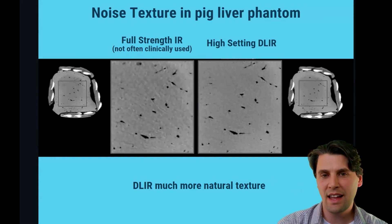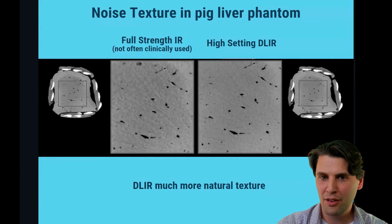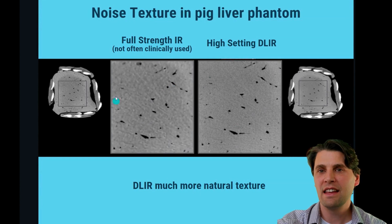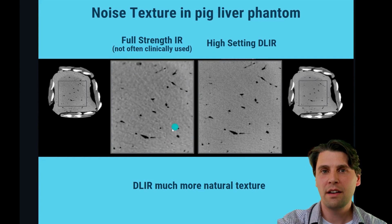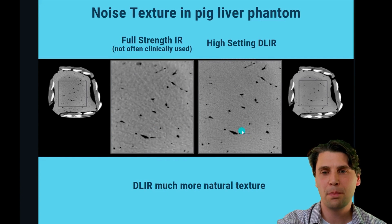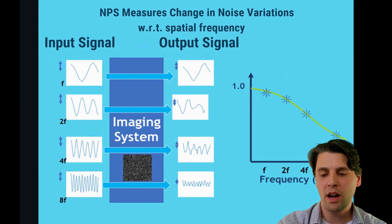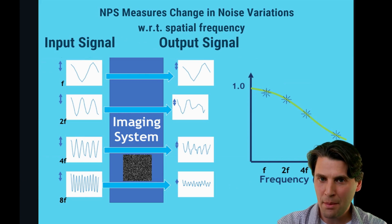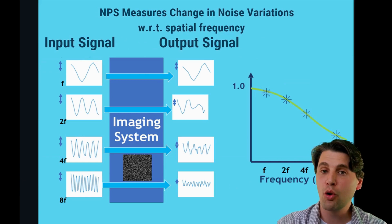Next, we looked at noise texture. These are some data we took early on of a liver — actually a cow liver from the store — and we put bones around that liver. These images have the same noise level but different noise texture. This is a level of iterative reconstruction above what is typically used, and when we compare that to a high setting of deep learning, you can see significant improvement in image texture. We can quantify that using a measure similar to the MTF, called the noise power spectrum (NPS).